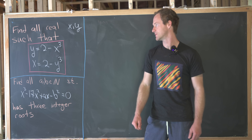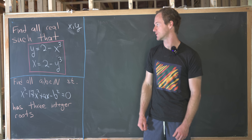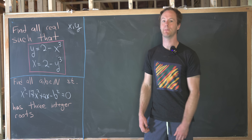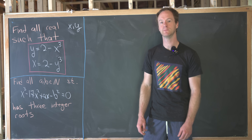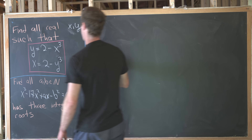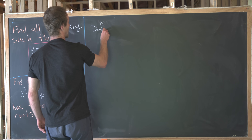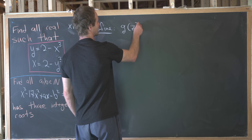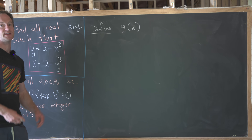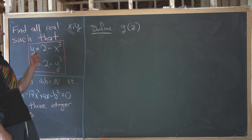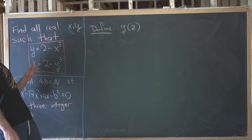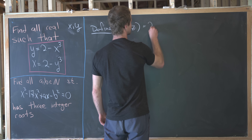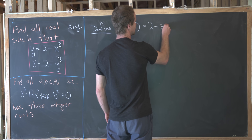There's some nice symmetry to that. In fact, the symmetry is so nice that there's probably something special about this function, 2 minus something cubed. So keeping that in mind, let's define that as a function. We'll define g of z — using z so it doesn't conflict with x and y — as g(z) equals 2 minus z cubed.